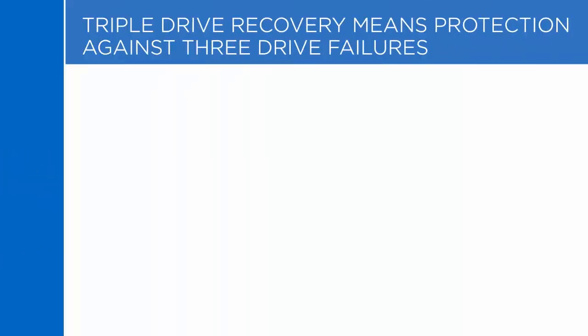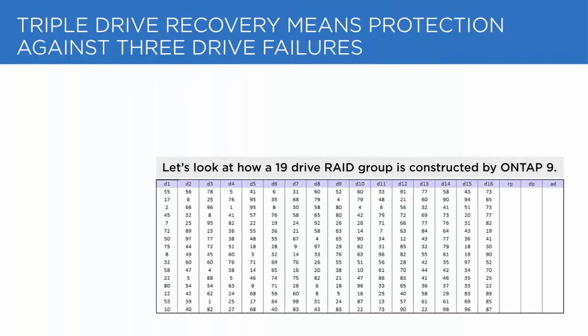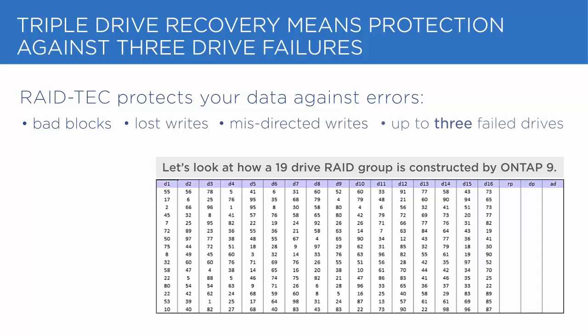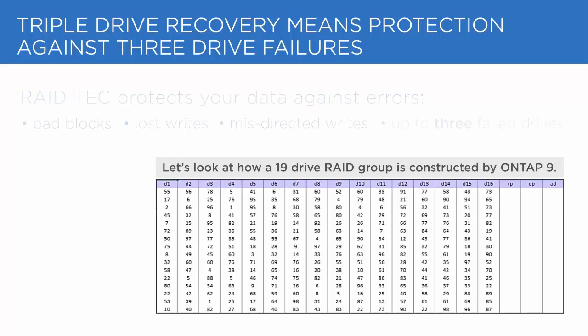As a reminder, the RAID technology built into ONTAP protects your system against numerous types of disk errors, such as bad blocks, lost writes, misdirected writes, and complete disk failures.